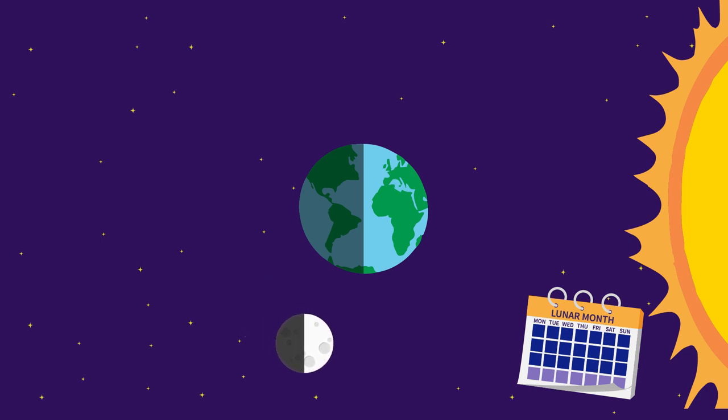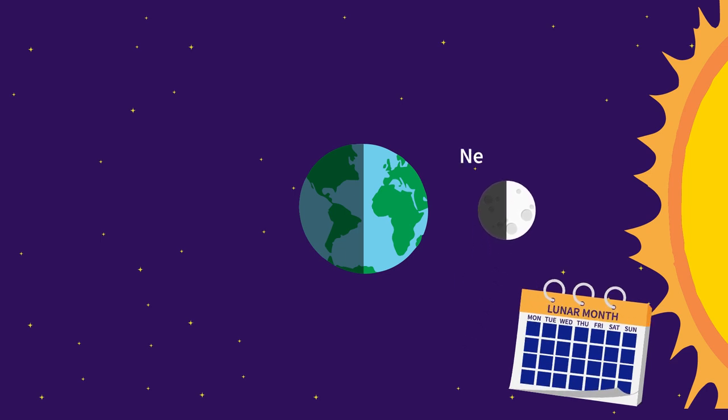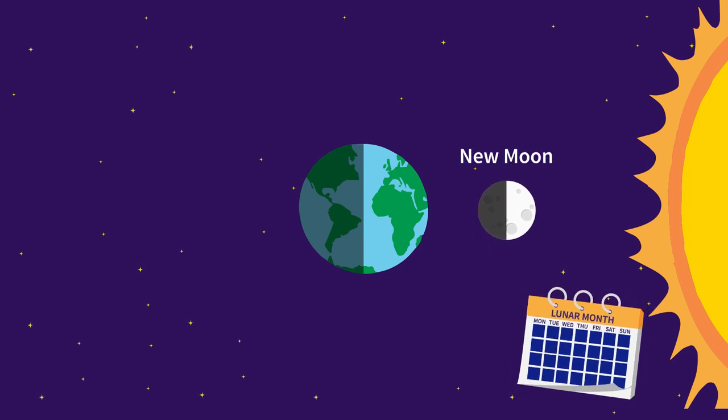One week after the full moon, we see another half moon because half of the moon's lighted side faces Earth—that's the last quarter phase. But guess what? In the end, it becomes all dark and we're back to the new moon. The moon is now ready to start a new cycle.